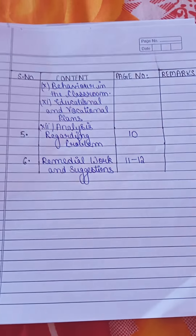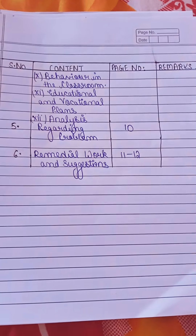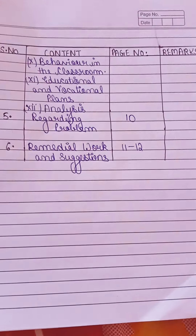It is not necessary — if you know the child, you write it on your own. Randomly, you can write a name of a child. Also included are behavior in the classroom, education, vocational plan, and analysis. You have to analyze it at the end. Fifth, regarding the problem — you have to identify the actual problem. Sixth, Remedial Work and Suggestions — you give your own suggestion on how to address or correct that problem.